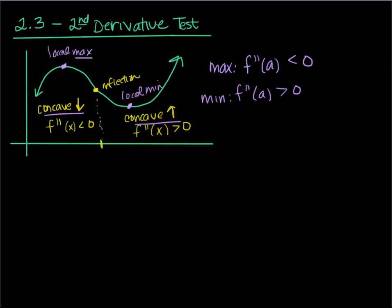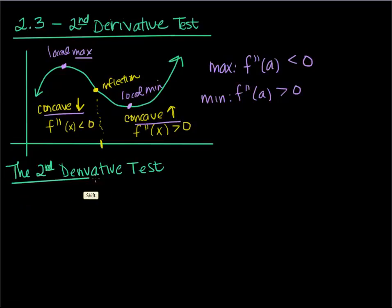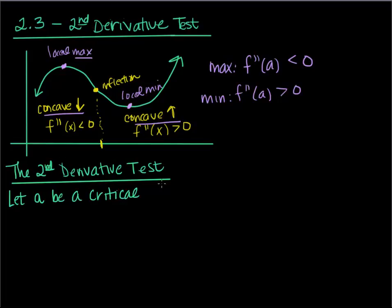That's basically what the second derivative test tells us. So let's write this down more nicely. The second derivative test — we'll use it to find maximums and minimums. Sometimes it's a lot easier than the first derivative test, but sometimes it doesn't give you enough information, or the second derivative is too complicated to take. So we wouldn't want to use it in those cases. First off, let a be a critical number of f of x. Maximums or minimums can only occur when the derivative is zero — when we have a horizontal tangent. So again, this means f prime of a equals zero. Our first step with the second derivative test will be to find the critical numbers.